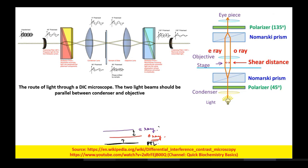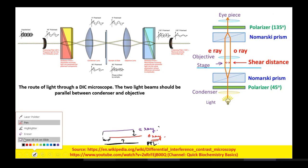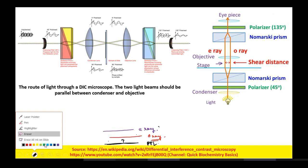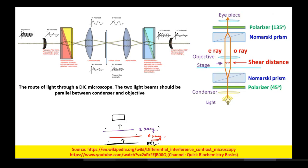The shear distance separates the two waves, and there is a phase between them. Next, these rays — the E ray and the O ray — pass through the sample specimen, where there will be a retardation in the speed of light depending on the optical density of the material encountered.